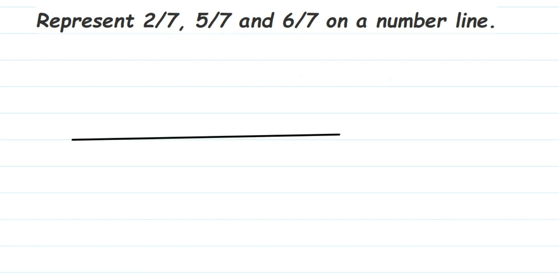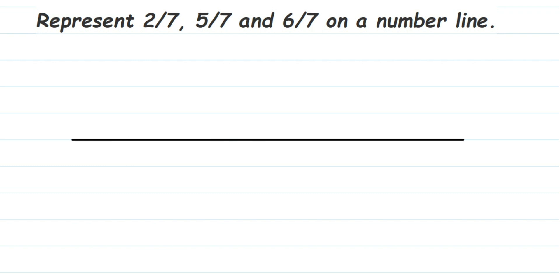Here is the number line. I'm going to divide it into 7 equal parts between 0 and 1. The denominator is 7, that's why — whatever denominator you have, you divide into that many equal parts. So between 0 and 1 we have 7 equal parts. Now, parts means the spaces, not the lines — don't count the lines. This is 1, 2, 3, 4, 5, 6, 7 — seven equal spaces.